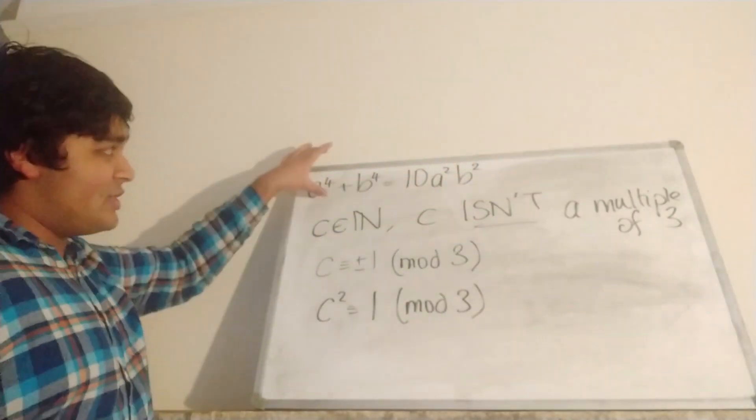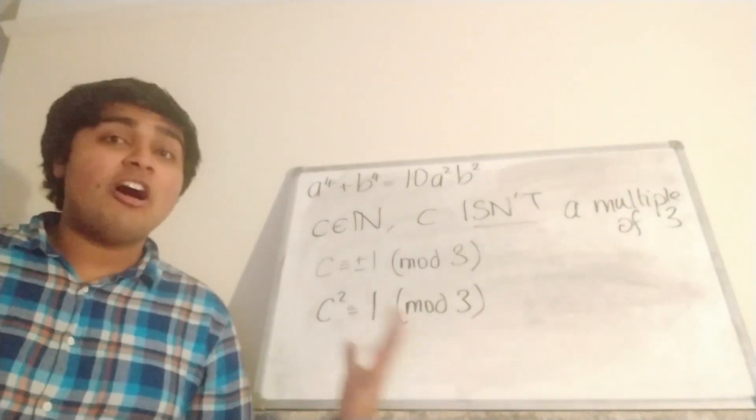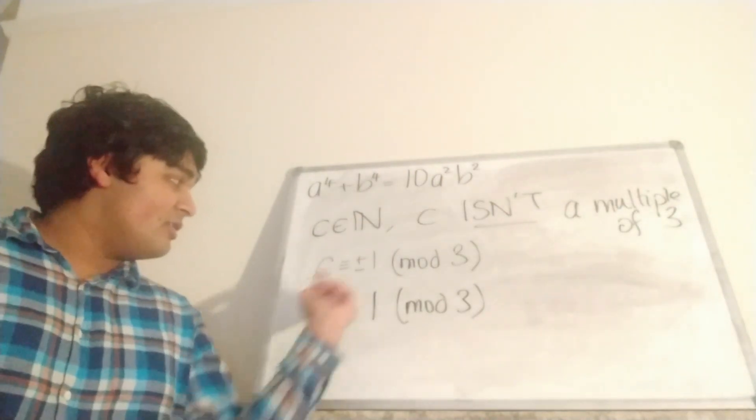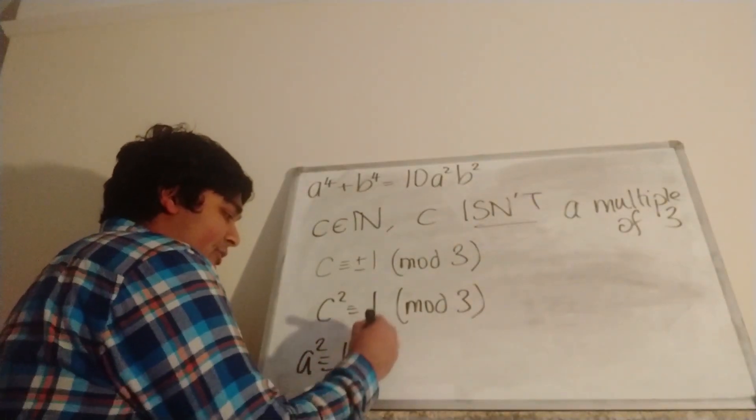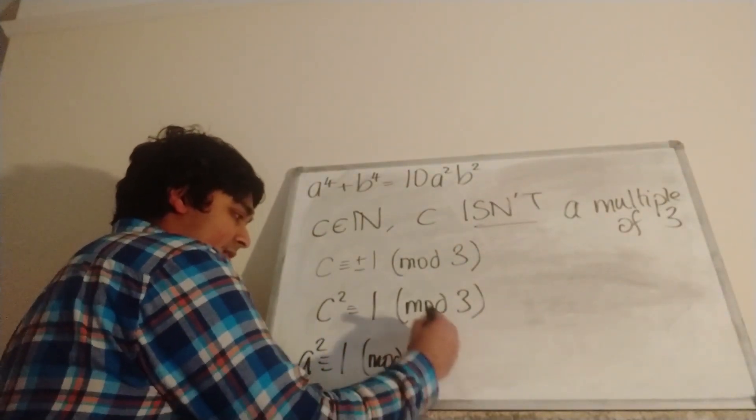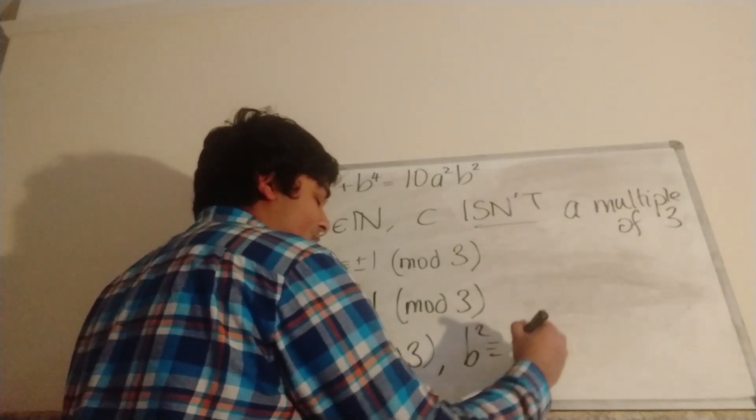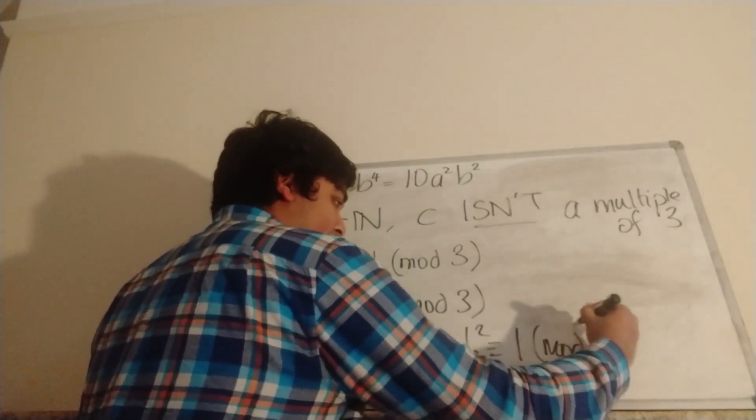Now if we go back to this equation here, we said that A and B aren't multiples of 3. So if we can then apply this result here, so we know that A² is congruent to 1 mod 3, and B² is also congruent to 1 mod 3.